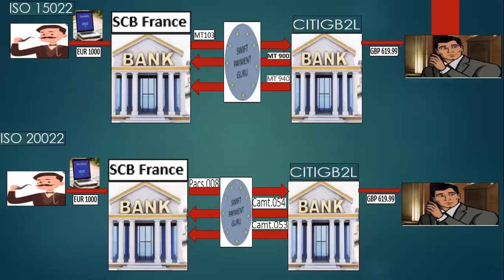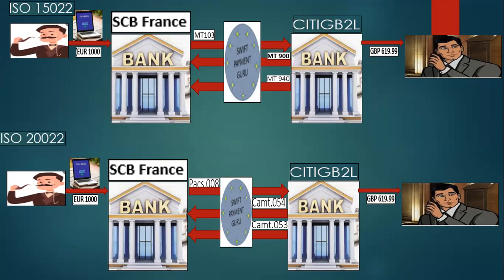In this tutorial representation, the first part shows the ISO 15022 way — the traditional SWIFT MT messaging way. The ordering customer who wants to initiate the transaction uses any net banking channel provided by the bank. This person holds an account with Standard Central Bank France, initiates a transaction, and the bank does the necessary payment-related validation.